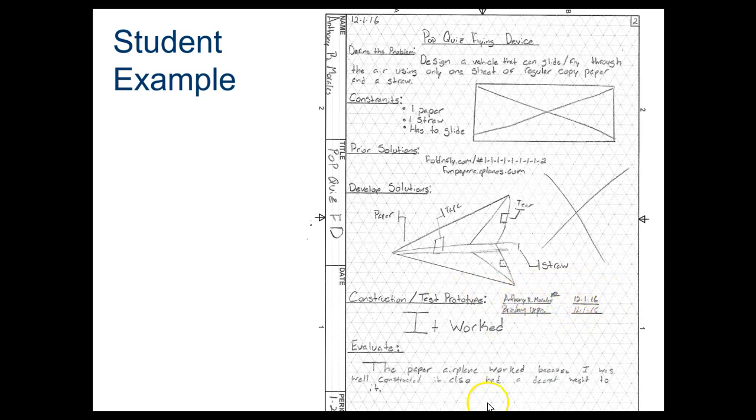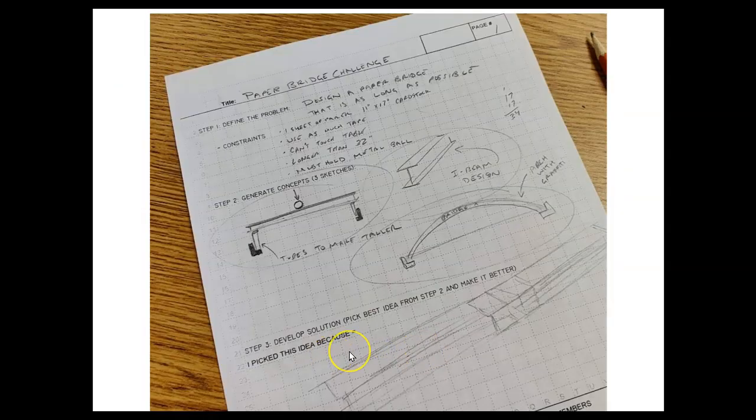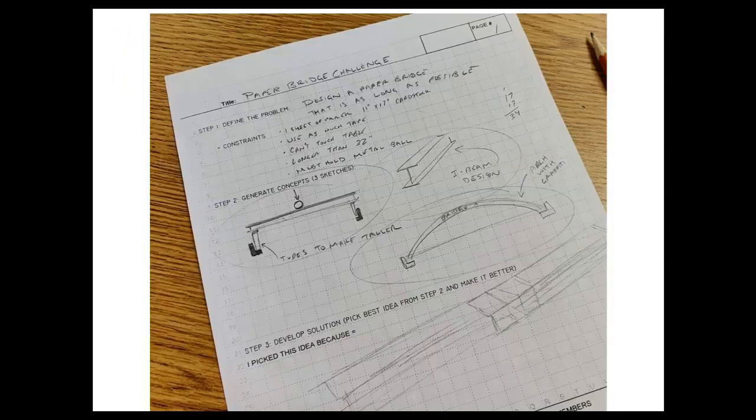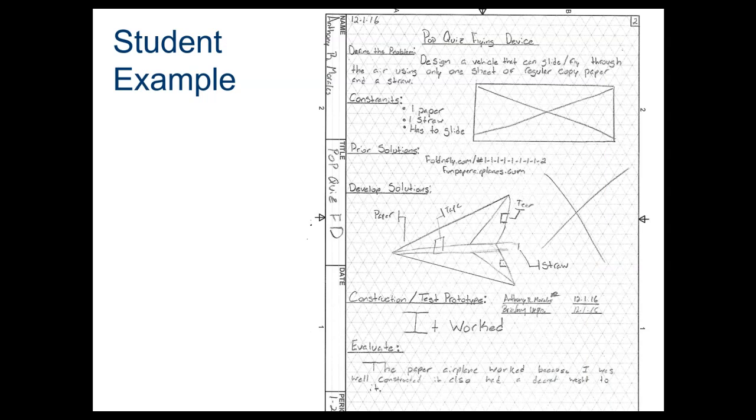This should have been at the bottom, but at least they included it. And then their evaluation is only one sentence. They should have answered at least minimum three of the evaluation questions at the minimum. They wrote 'the paper airplane work because it was well-constructed and also had a decent weight to it'. That doesn't really say anything. It doesn't say that it flew through the air at all. It says it was well-constructed. It doesn't say that it solved the solution or how it solved the solution.